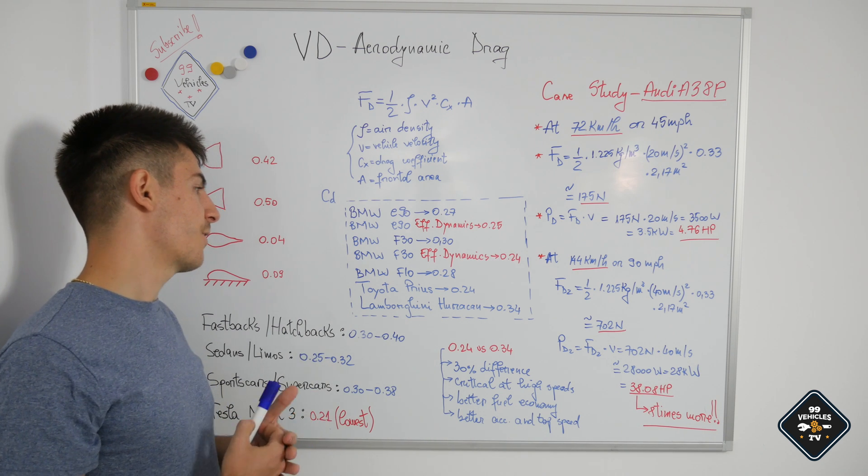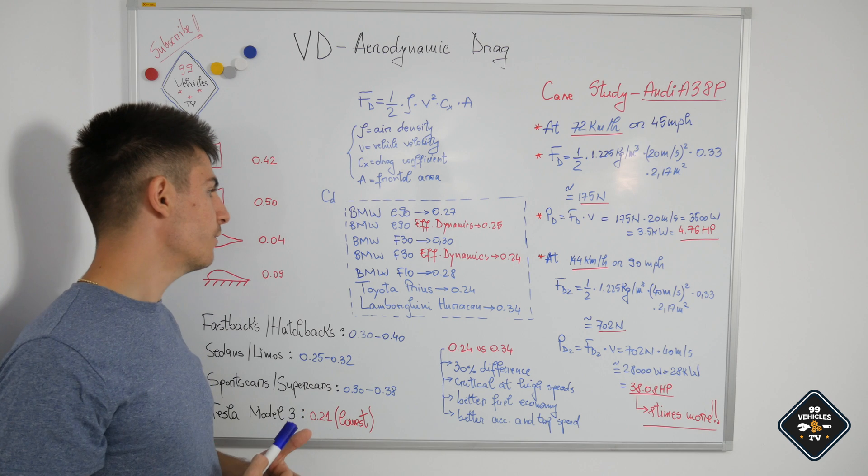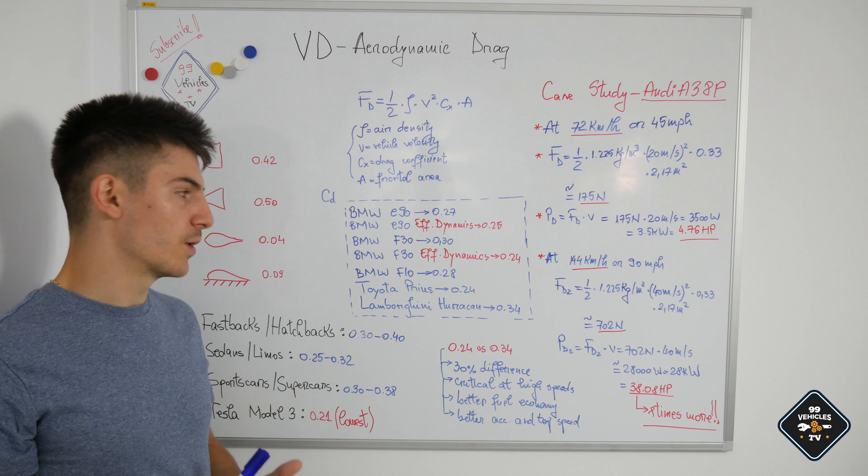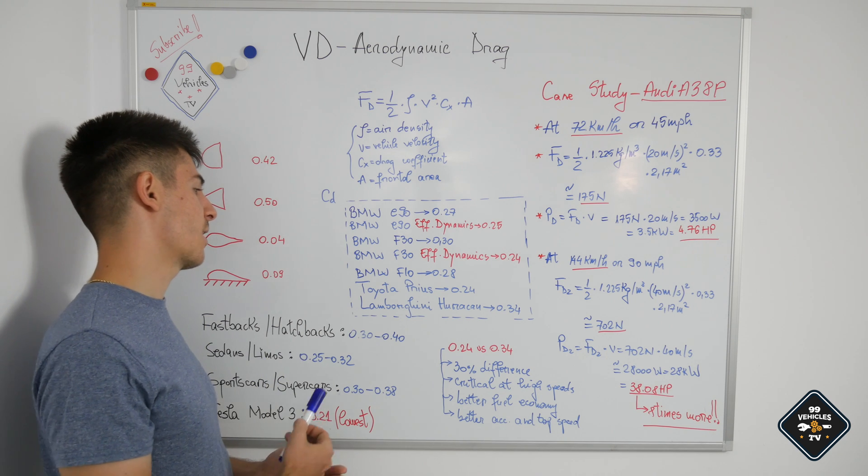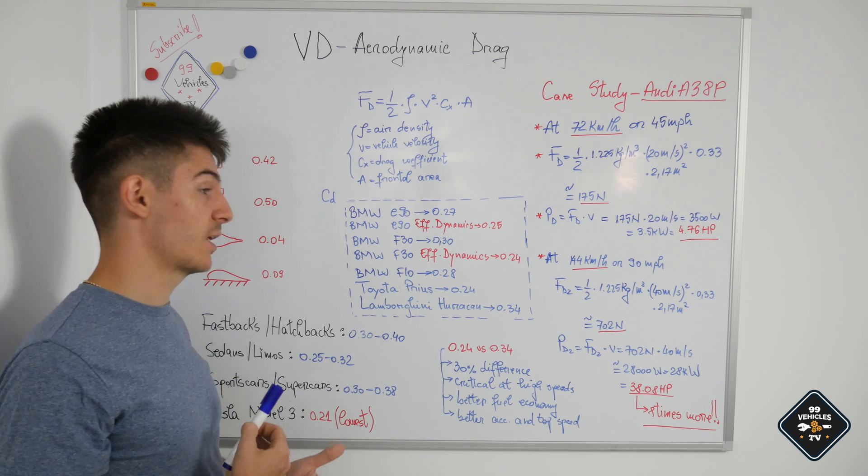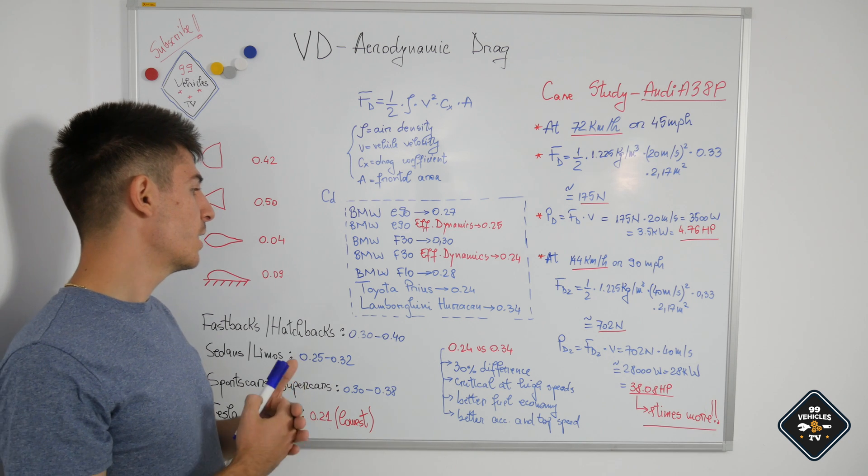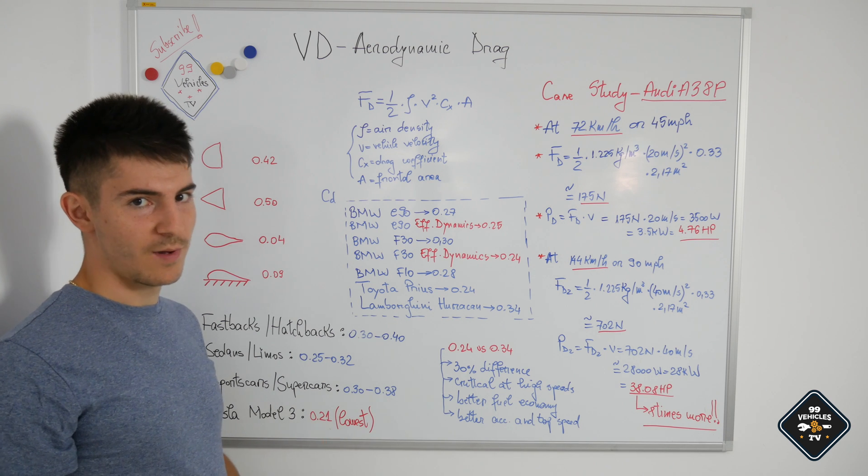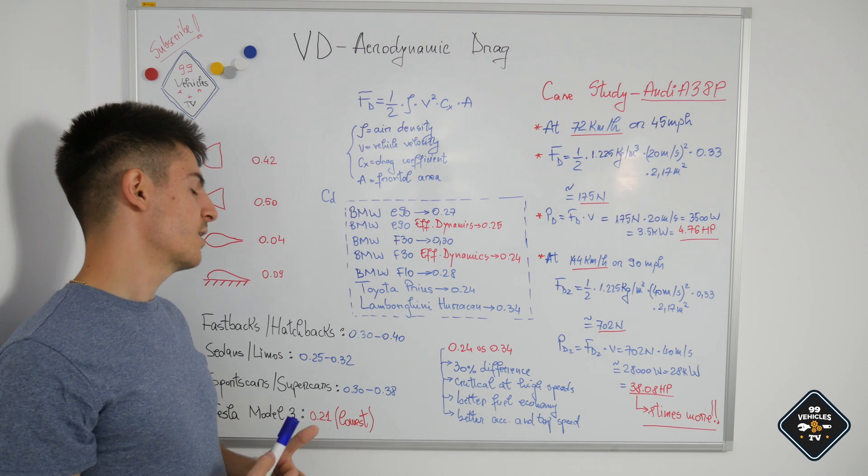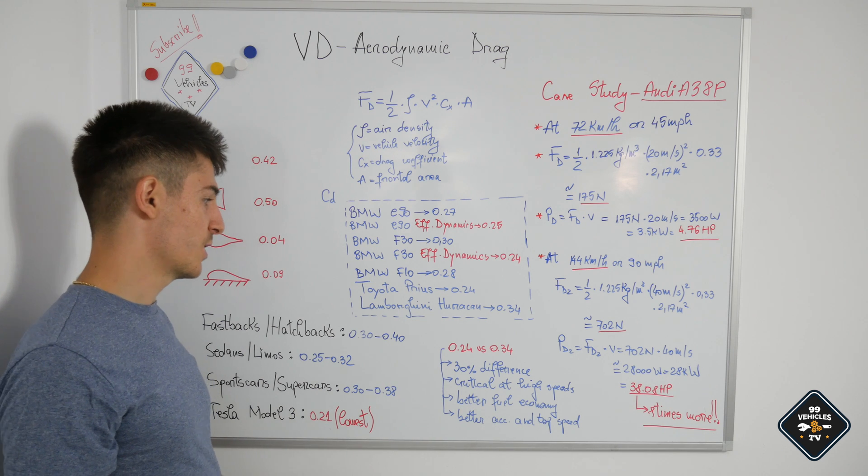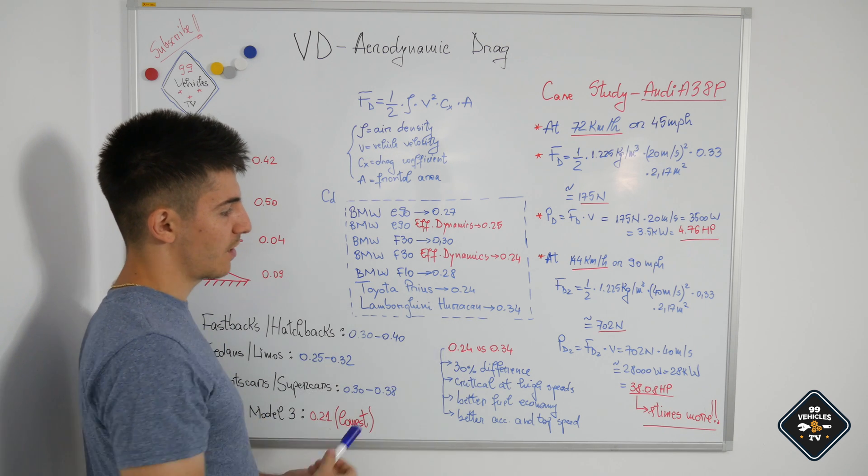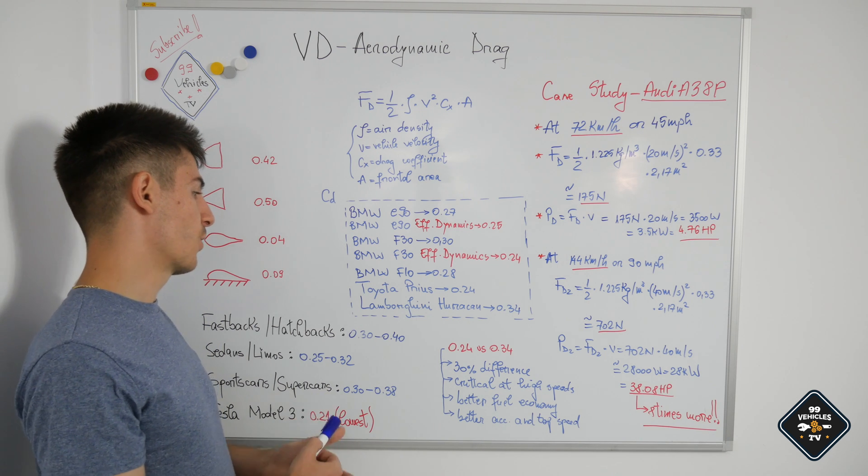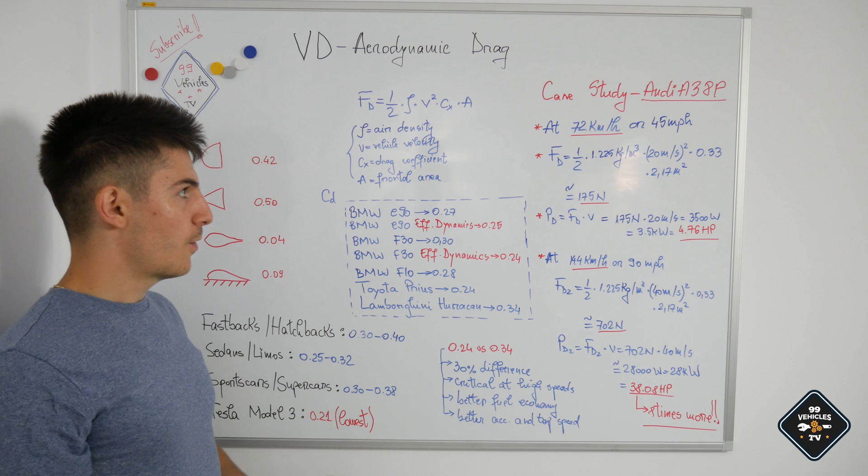In BMW F33 series from 2012, the standard drag coefficient is around 0.30 and it could be lowered down to 0.24 if the car is purchased with the optional efficient dynamics package. Also in the 5 series we have a 0.28. Just as a small comparison, the Toyota Prius has a 0.24 drag coefficient, which compared to the Lamborghini Huracan which has a 0.34, makes the car much more aerodynamic and fuel efficient.